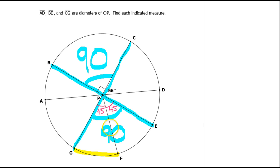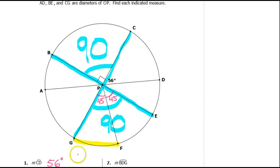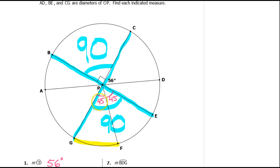Those two angles are complementary — they add up to 90. What we care about right now is the measure of arc GF. That arc goes with the 45 degree angle, so arc GF is 45 degrees.